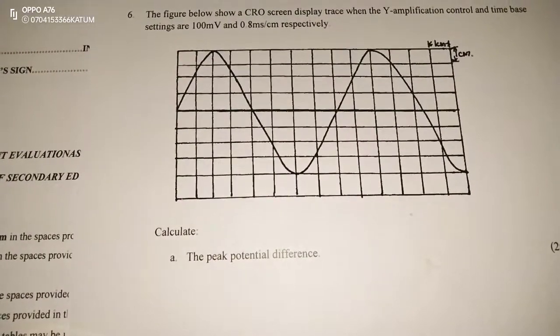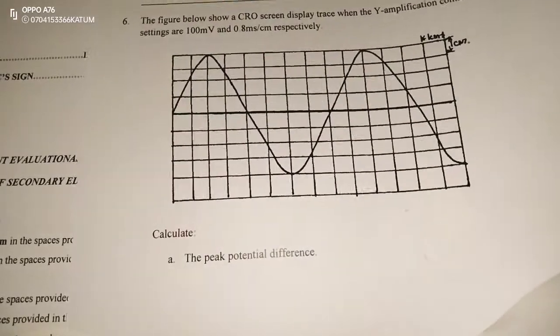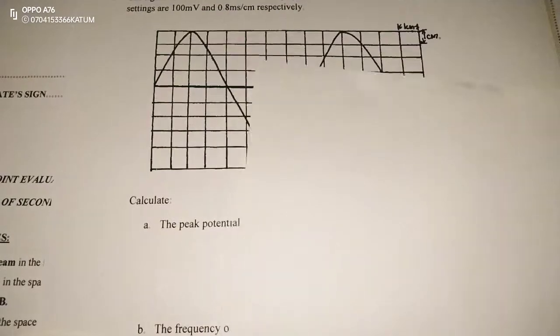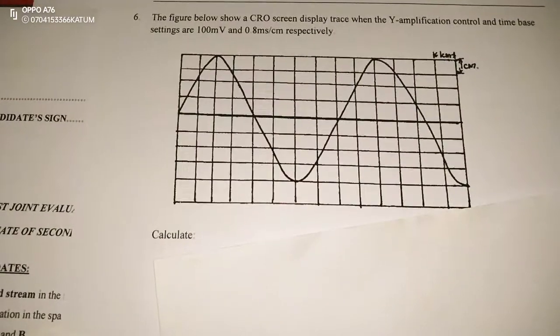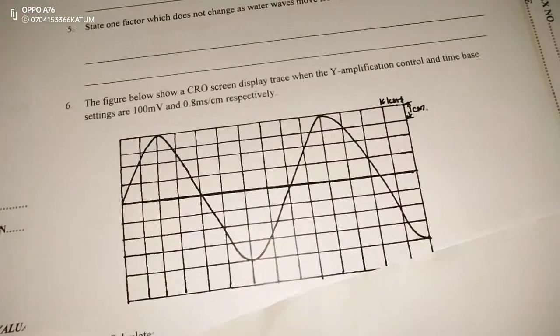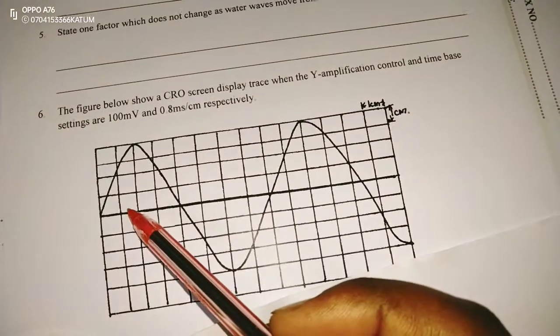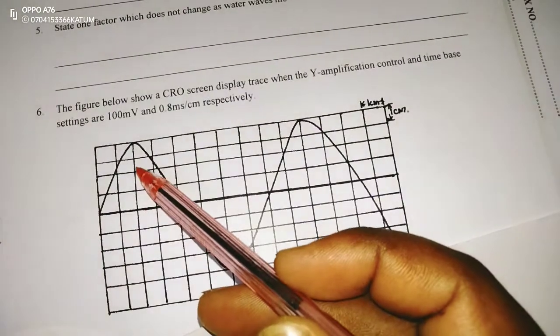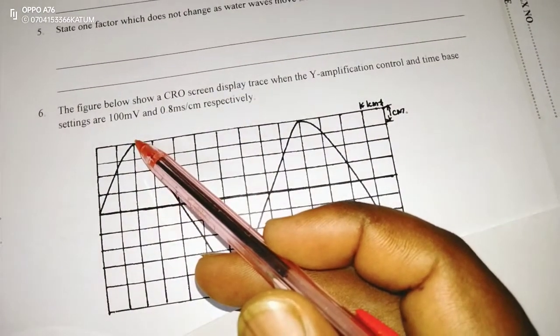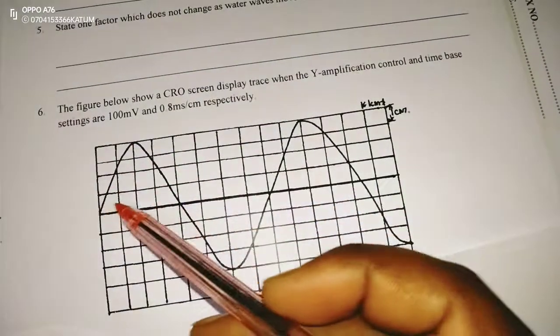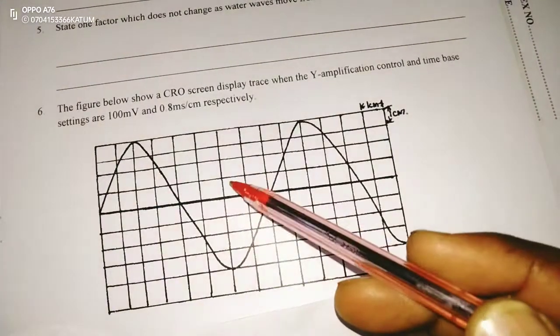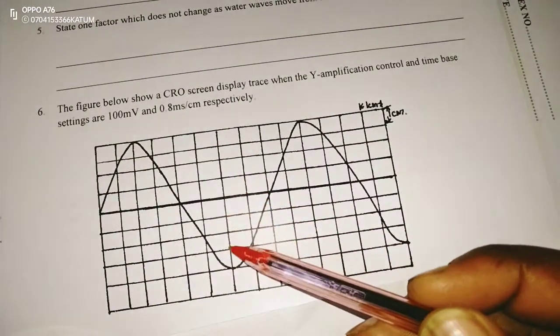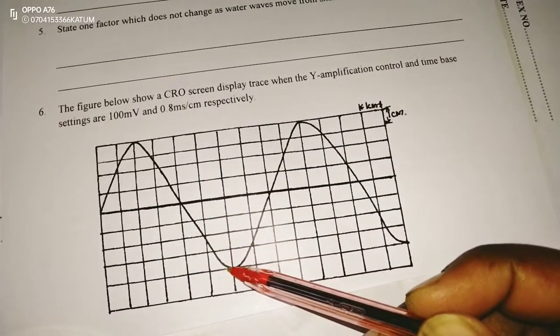We are told to, first of all, calculate the peak voltage. So the peak voltage, or the peak potential difference in the CRO, is going to be determined by, remember, in the Y settings, or in the Y control, we have 1, 2, 3, 4 centimeters, or rather divisions, from the mean position. We can also count on the lower side of the wave, 1, 2, 3, 4 divisions, and per division, we have 100 millivolts.